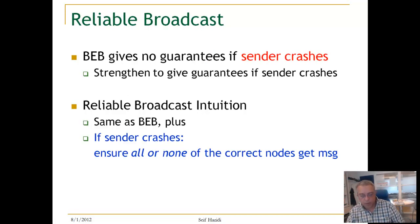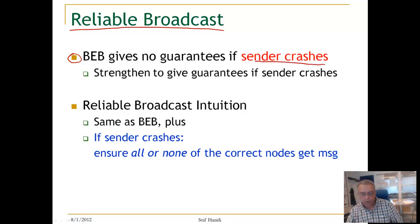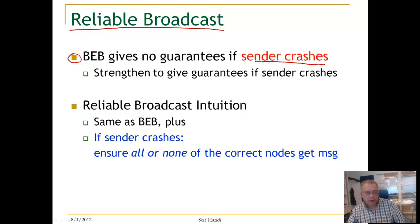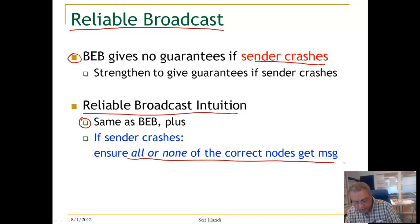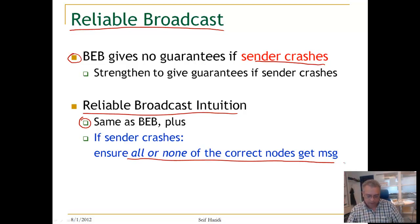Let us now look at reliable broadcast. Best effort broadcast gives no guarantee if the sender crashes. We would like to strengthen our properties so that we can give some guarantee even if the sender crashes, as long as some correct process delivers the message. Reliable broadcast is the same as best effort broadcast plus: if the sender crashes, ensure that all or none of the correct processes get the message. As soon as one correct process gets the message, the reliable broadcast abstraction is obliged to deliver it to all other correct processes.